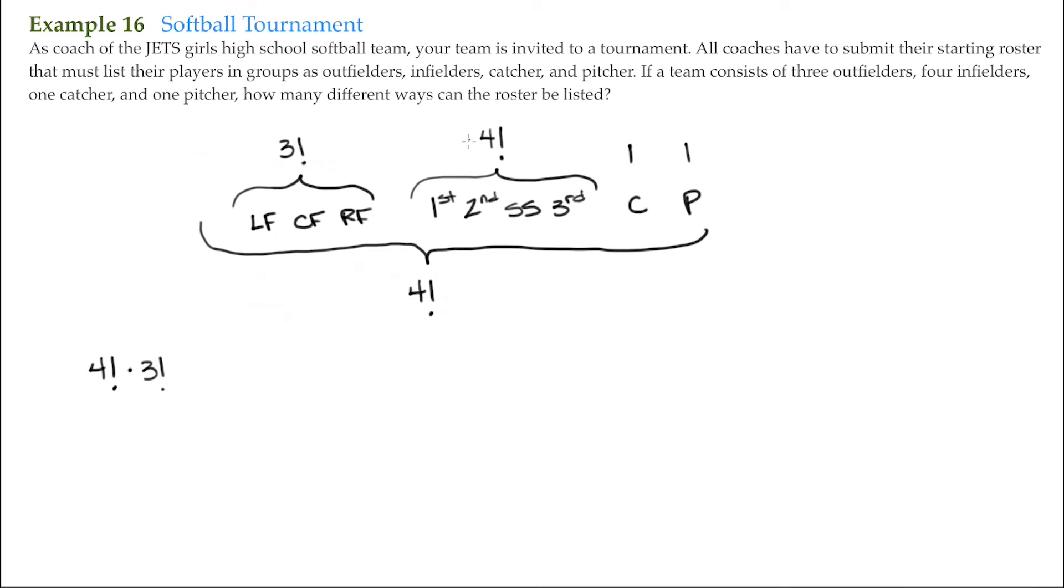times one times one, and that comes out to be three thousand four hundred and fifty-six different ways that the roster can be listed.